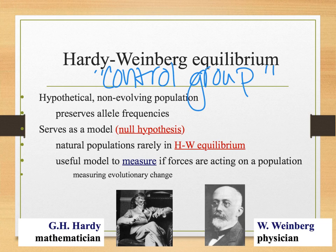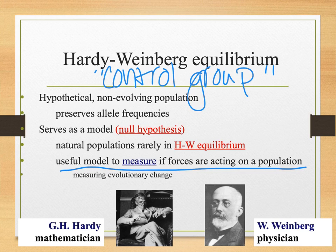We use Hardy-Weinberg to see — okay, we've got this population of finches, people, bacteria, whatever — and something's going on. We want to know what it is. What agent is working on it? Is it mutation? Is it gene flow? We can use their model to help us better understand what's happening in these populations.